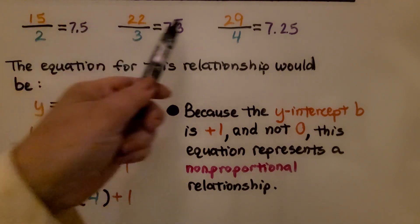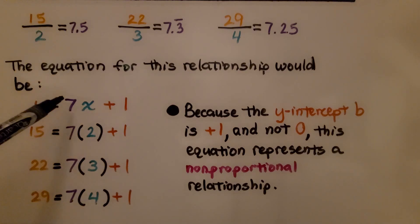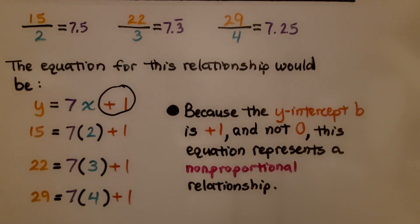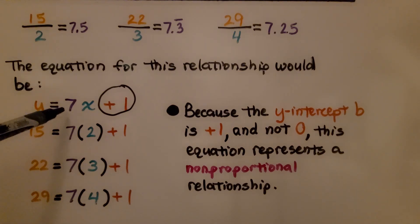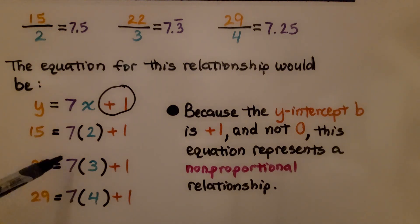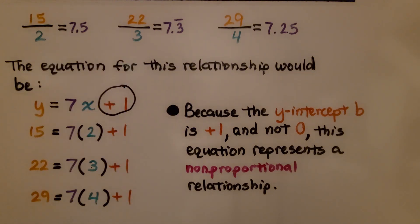These were non-proportional because the ratios are not constant — we have different numbers. The equation for this relationship would be Y is equal to 7x plus 1. Right away we can see that the Y-intercept B is plus 1 and it's not 0. This equation represents a non-proportional relationship. If we put in 7 as our m value and multiply by x equals 2 and add 1, we get the Y value of 15. Multiplying 7 times 3 and adding 1 gives 22. And multiplying by 4 and adding 1 gives 29. Because the Y-intercept B is plus 1 and not 0, this equation represents a non-proportional relationship.